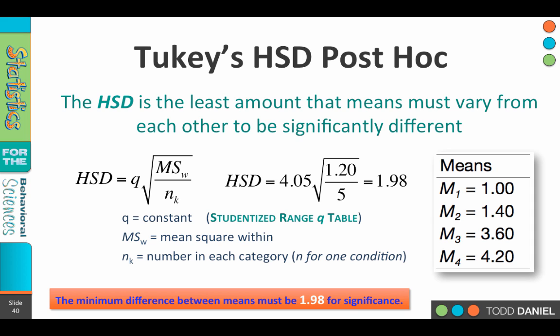But look at mean 1, which has a value of 1, and mean 4, which has a value of 4.2. Subtract them and it's 3.2. Since 3.2 is greater than 1.98, the difference between mean 1 and mean 4 is statistically significantly different.